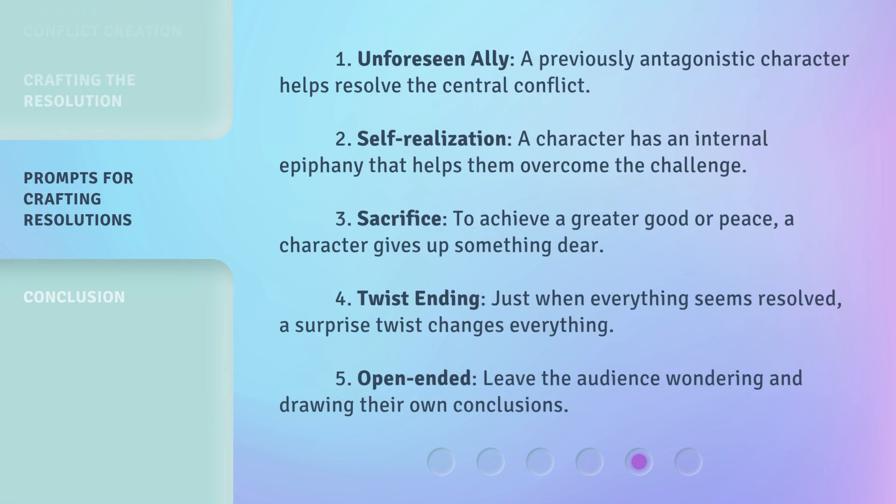1. Unforeseen Ally — A previously antagonistic character helps resolve the central conflict. 2. Self-realization — A character has an internal epiphany that helps them overcome the challenge. 3. Sacrifice — To achieve a greater good or peace, a character gives up something dear. 4. Twist Ending — Just when everything seems resolved, a surprise twist changes everything. 5. Open Ended — Leave the audience wondering and drawing their own conclusions.